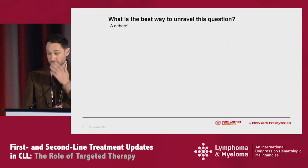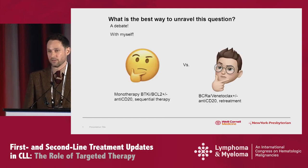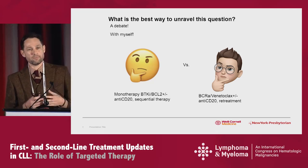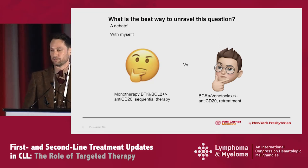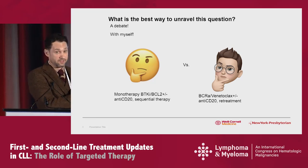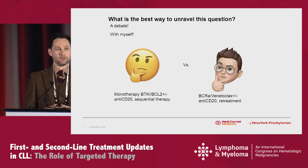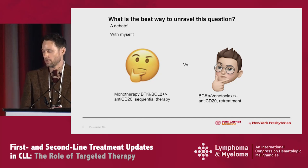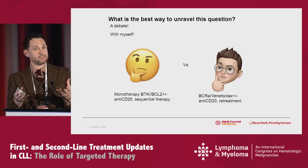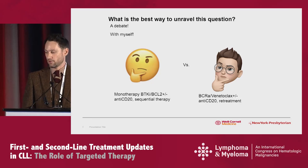So what is the best way to unravel this question? I see it as a debate with myself. On one side: monotherapy treatments — continual BTKi versus potentially venetoclax plus or minus an anti-CD20 for finite duration. On the other side: the new age B-cell receptor antagonist plus a BCL2 inhibitor, possibly plus or minus an anti-CD20, with potentially response-adapted or fixed durations and retreatment upon repeated progressions. Those are the two perspectives I'll take you through.